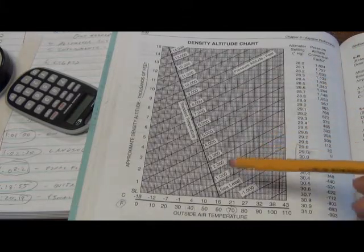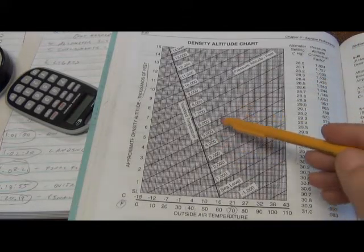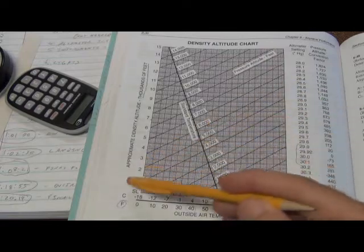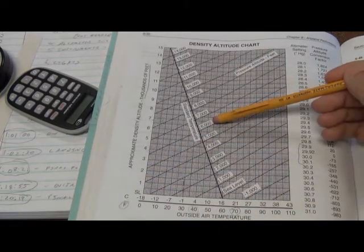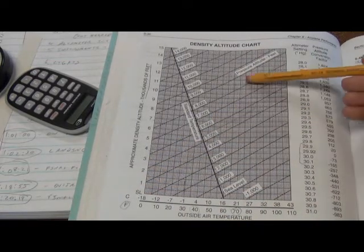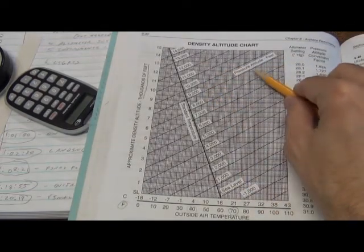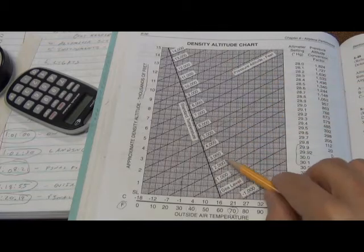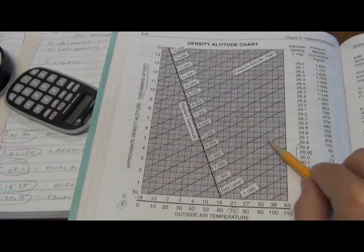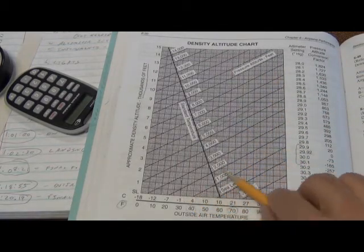And it's really pretty simple once you know how to use them. So pressure altitude is represented by these diagonal lines. So that would be 6,000 feet pressure altitude. This line here would be 9,000 feet pressure altitude. This line here would be 2,000 feet pressure altitude and so on.